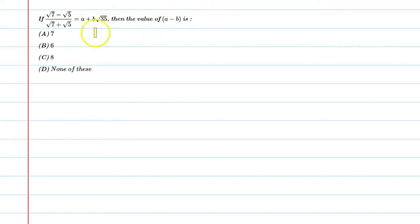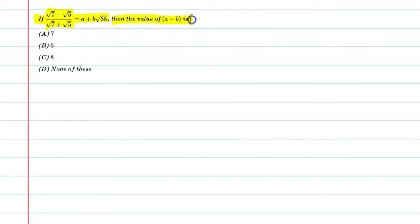Hello students, let's solve this question. If (√7 - √5) / (√7 + √5) is equal to a + b√35, then find the value of a minus b. Basically, is question mein humein yeh kaha gaya hai ki (√7 - √5) / (√7 + √5) = a + b√35, toh bata yeh a minus b ki value kya ho.